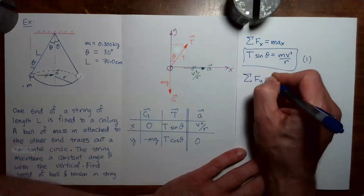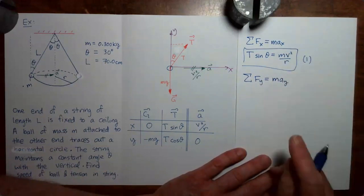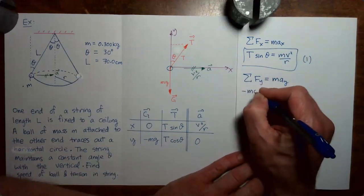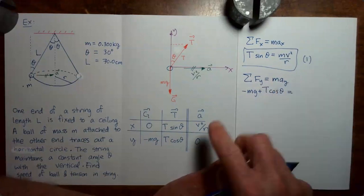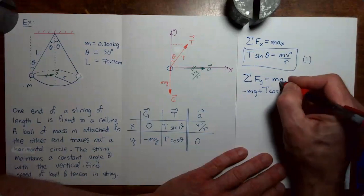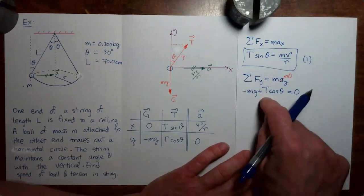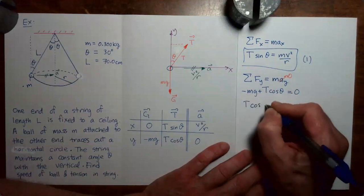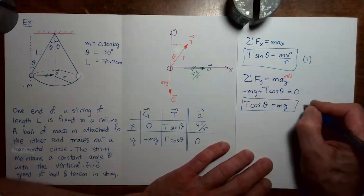The y component of Newton's second law says the sum of the y components of the forces equals mass times the y component of acceleration. Summing the y components gives us minus mg plus T cosine theta, and the y component of acceleration is zero, so the right side is zero. Rearranging, T cosine theta equals mg. Let's call this equation 2.